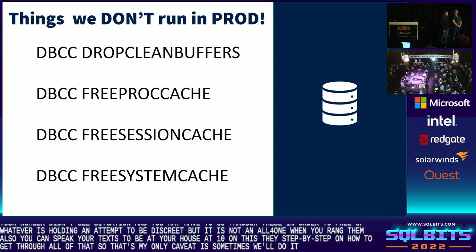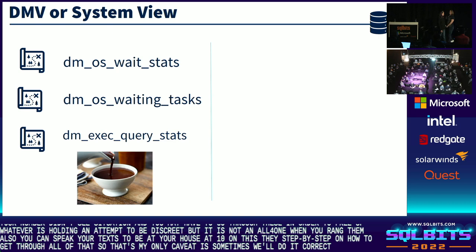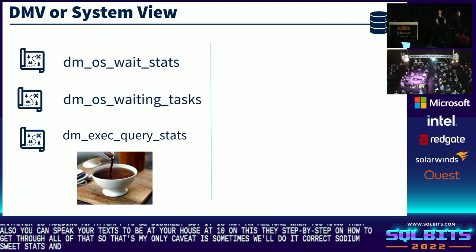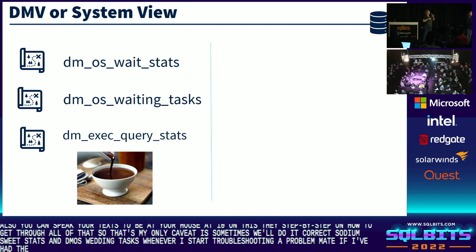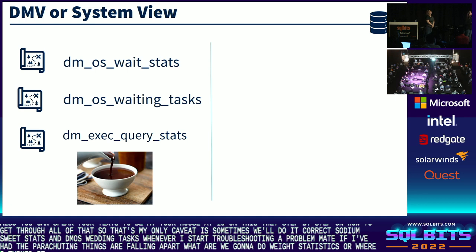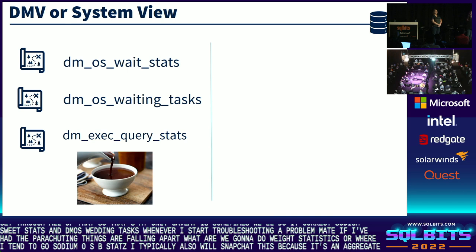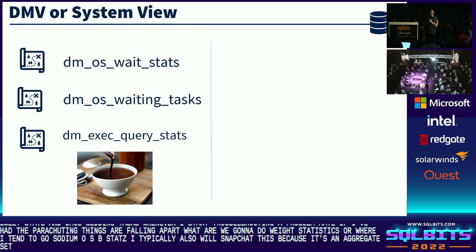DMVs and system views that we love — breaking our own rules, I have three. DM_OS_WAIT_STATS and DM_OS_WAITING_TASKS: whenever I start troubleshooting a problem, if I've had to parachute in and things are falling apart, wait statistics are where I tend to go. DM_OS_WAIT_STATS I typically snapshot because it's an aggregate since the last instance restart or since you cleared wait stats. I will snapshot that to see what's going on right across the system for a period of time.